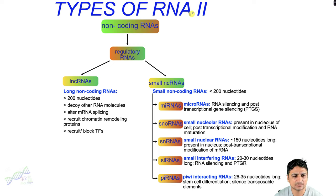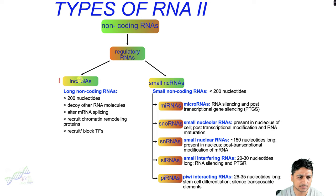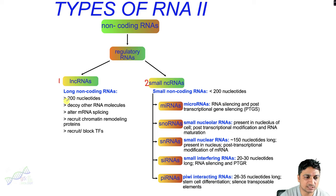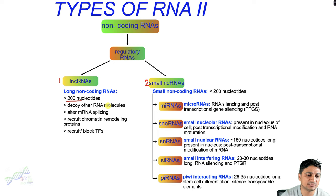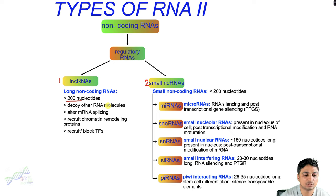There are two different types of regulated RNAs: one is the long non-coding RNAs and the other is the small non-coding RNAs. Long non-coding RNAs are RNAs with more than 200 nucleotides long. They are responsible for the decay of other RNA molecules, they also alter mRNA splicing, recruit chromatin remodeling proteins, and recruit and block transcription factors for the expression of a gene.